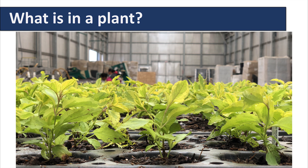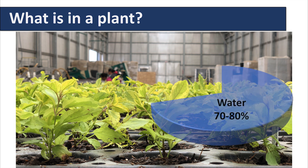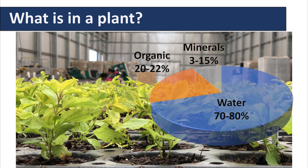First of all, what is in the plant? The plant is made up of 70 to 80 percent water, 20 to 22 percent organic matter, and the final 3 to 15 percent are minerals.